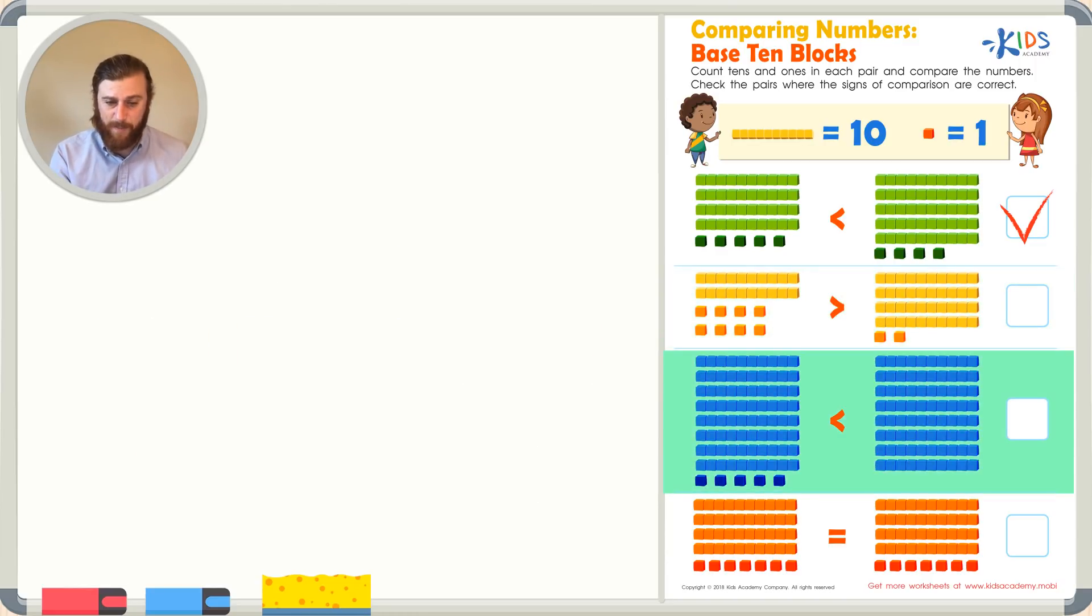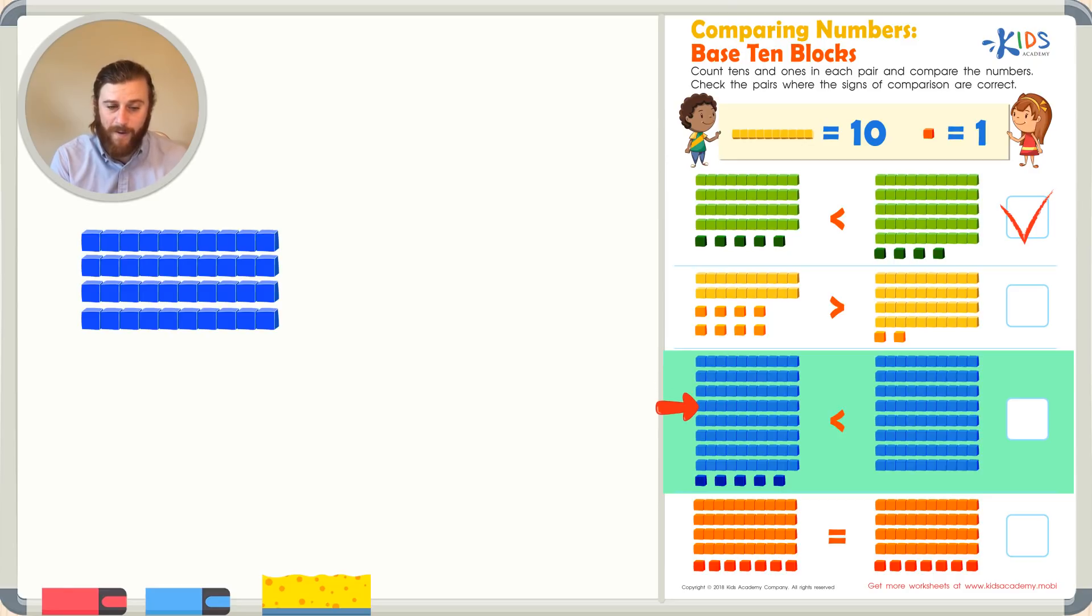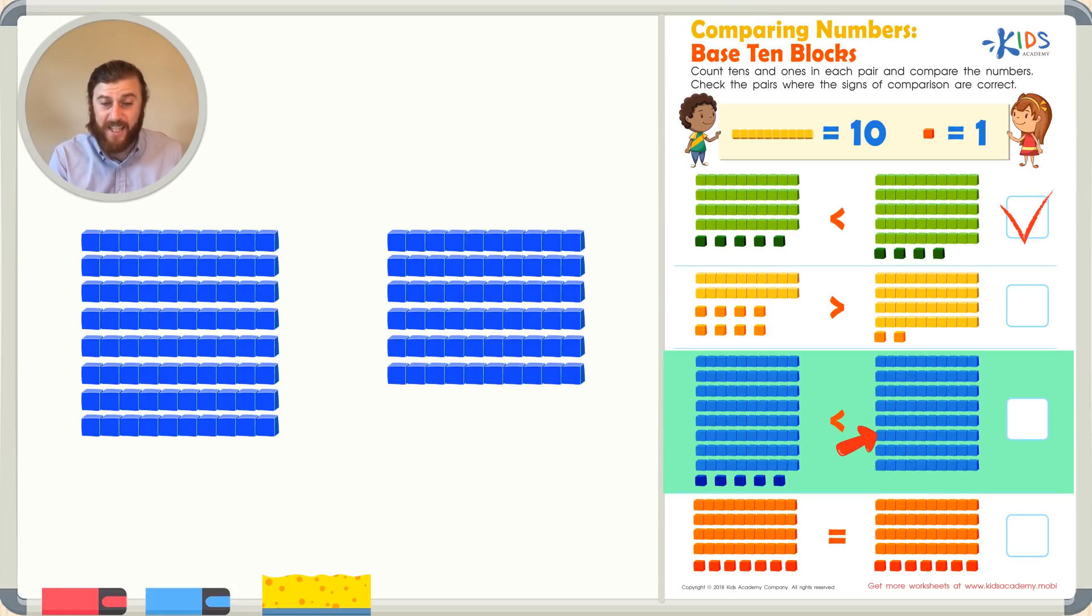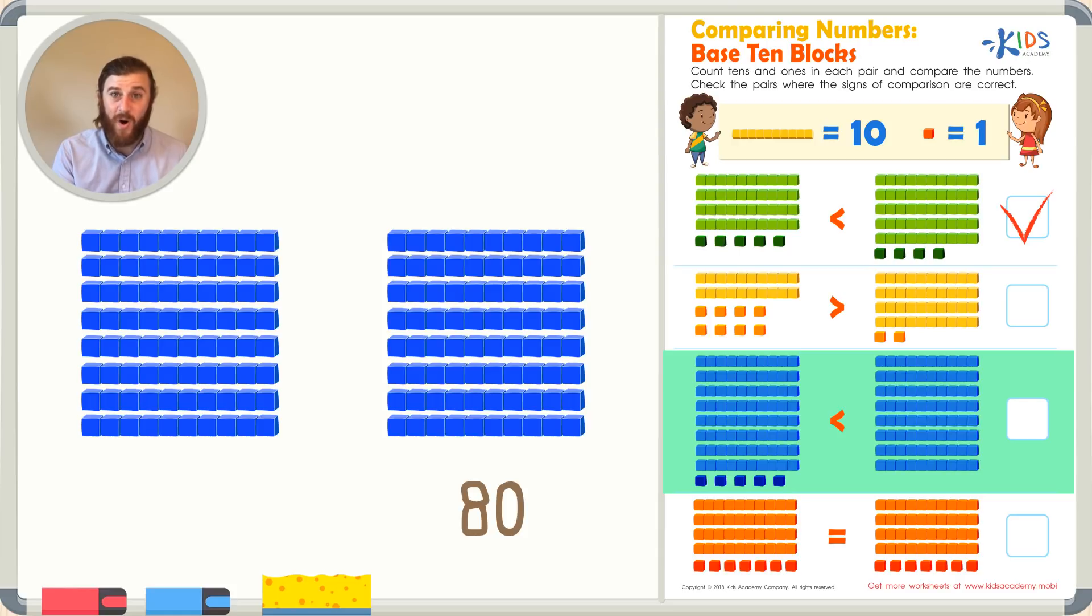Let's take a look at our next example. Wow, there's a lot of longs in this one. Let's see if we can figure out which number is larger by just counting the longs. Let's count the longs in the first number. We have 1, 2, 3, 4, 5, 6, 7, 8. So they both have 8 tens, which means they're both equal to 80. But the number on the left also has 1, 2, 3, 4, 5 cubes, making it 81, 82, 83, 84, and 85.